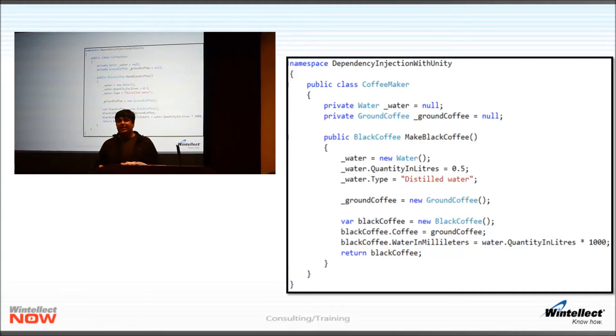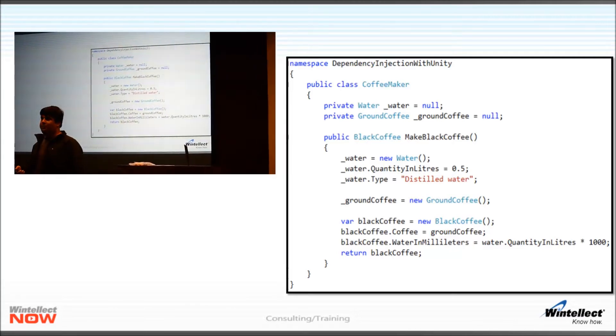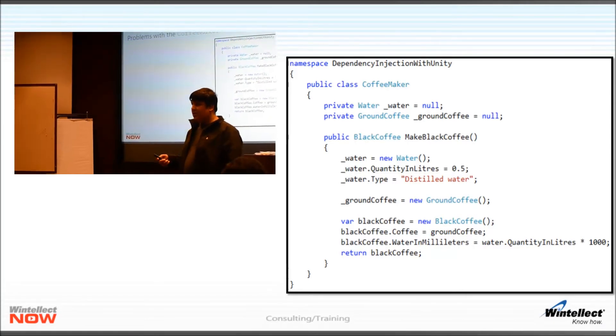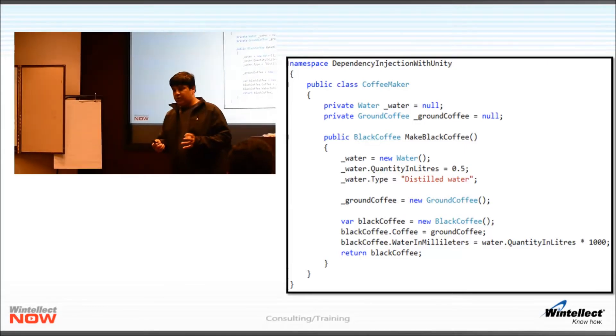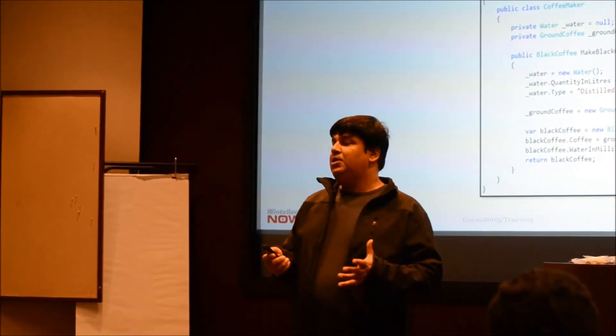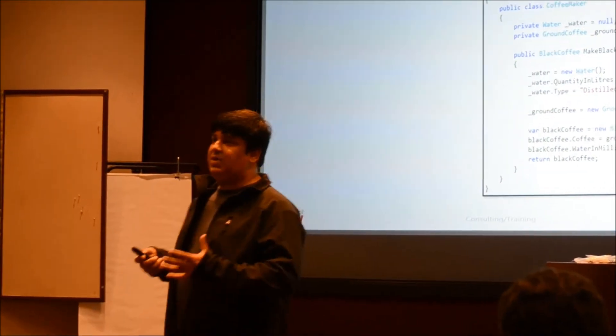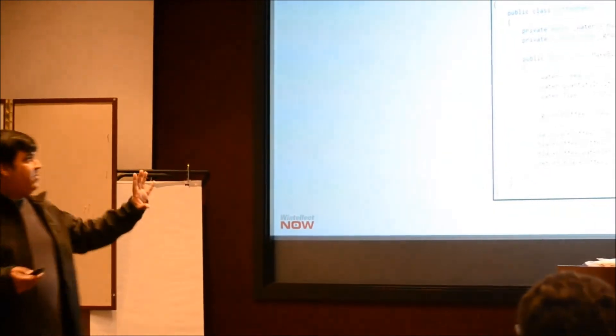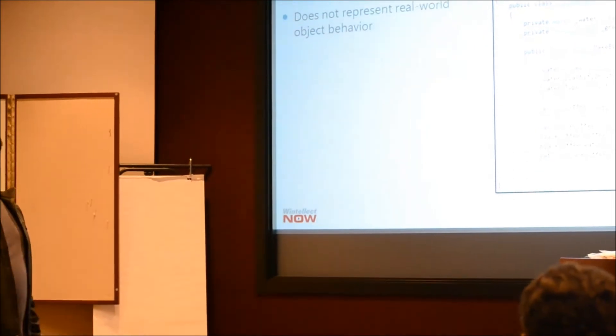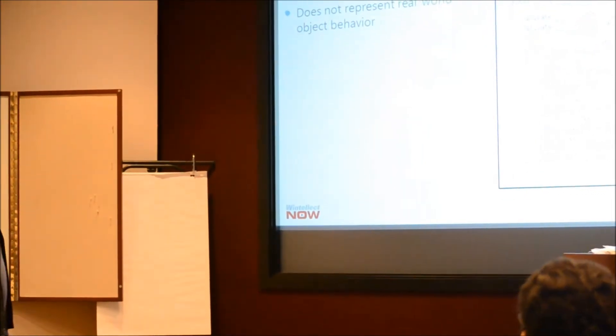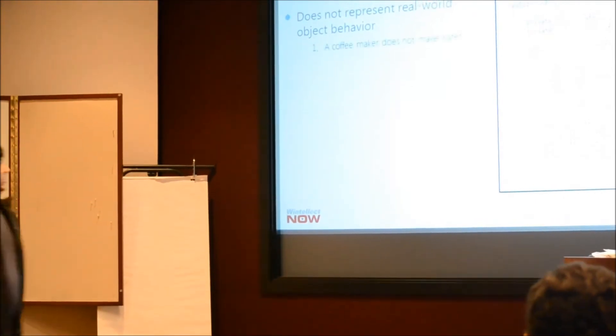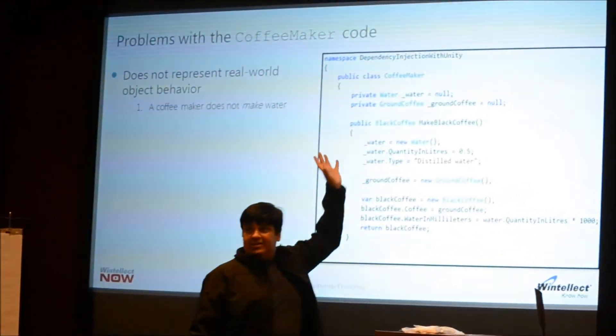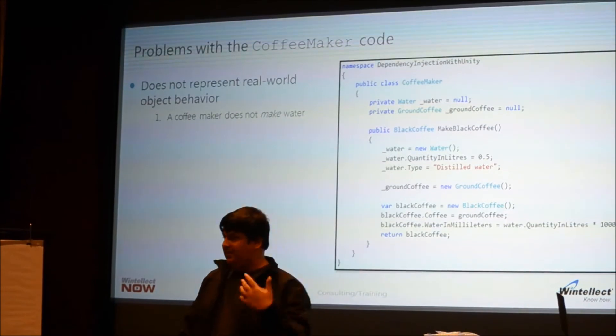However, this code is in violation of many of the principles of sound object-oriented design. Let's go over them one by one. Whenever we write code, our endeavor must be to model our objects as close as possible to their real-world representations. The first thing that's wrong with this code is that this coffee maker looks nothing like a real-world coffee maker. Because coffee makers don't make water. This coffee maker is materializing, it's creating water. That's the first thing that's wrong with this code.